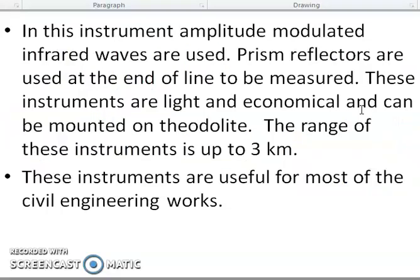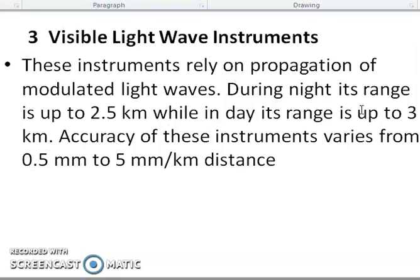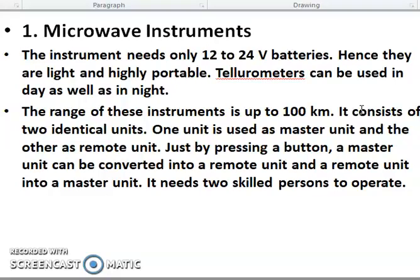Nowadays we are using the infrared ray instrument. In this instrument, amplitude modulation is used for the infrared ray. A prism reflector is used at the end of the line to be measured. This instrument is light and economical and can measure only up to 3 km. The visible light instrument — the third type — is mainly used during the night, with a range of 2.0 km to 3 km maximum. Accuracy varies from 0.5 mm to 5 mm per km. The microwave instrument at about 100 km is a very important instrument.